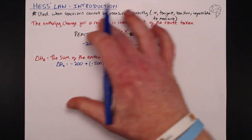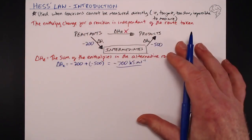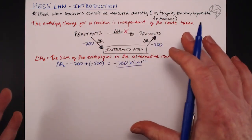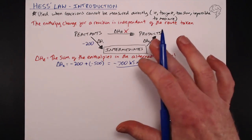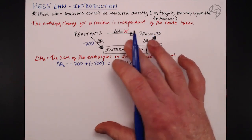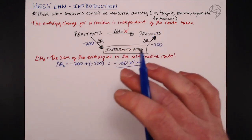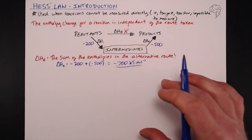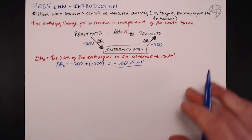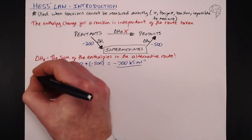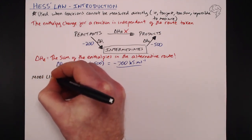Now this ideal alternative route scenario is not what you'll get in an exam. I'm going to draw out two more likely scenarios and explain how to handle them.